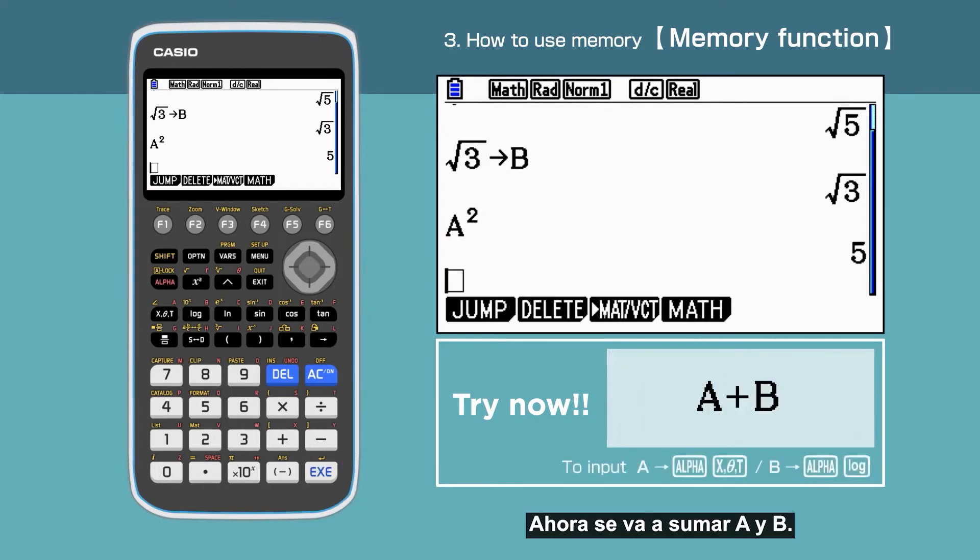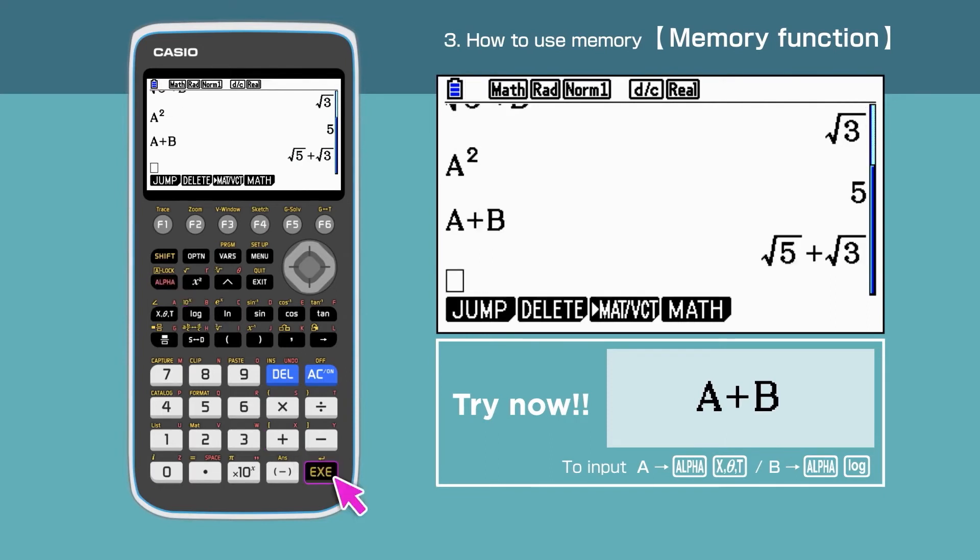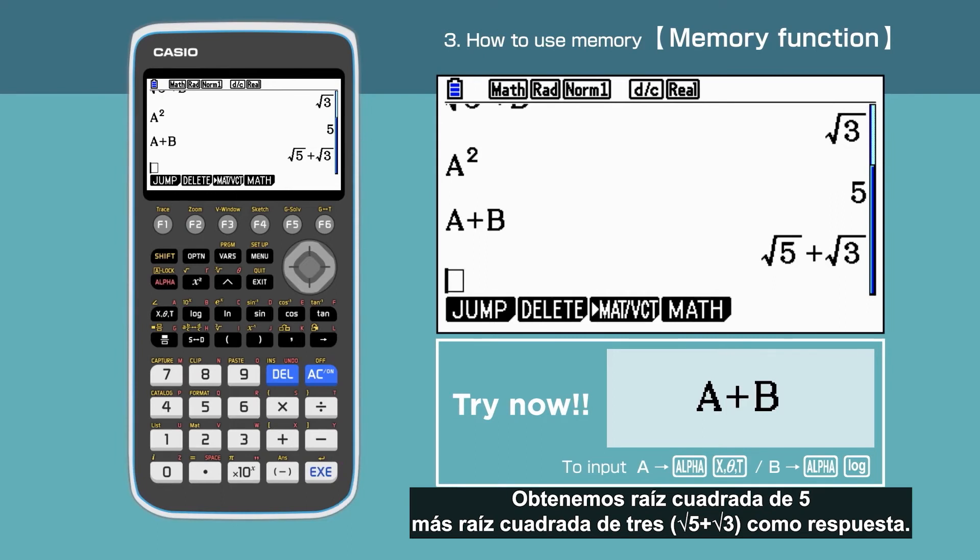Next, we are adding A and B. We get root 5 plus root 3 for the answer.